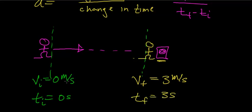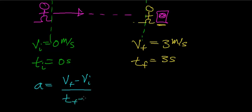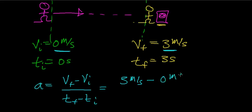Let's figure out how to use the definition of acceleration for this example. The acceleration equals the change in velocity — the final velocity minus the initial velocity — divided by the time it takes to change that velocity, the final time minus the initial time. Since the final velocity is 3 meters per second and the initial velocity is 0 meters per second, the numerator is 3 meters per second. The time interval is 3 seconds minus 0 seconds.